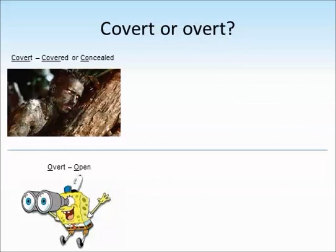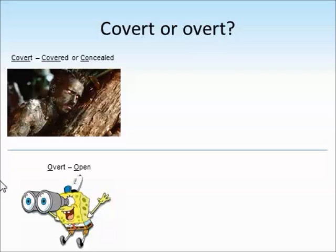First, let's look at the differences between covert and overt observations. Observations just involve watching people. We can either hide while we're watching them so that they don't know they're being observed, or we can tell them that we're watching them and be open about it. Think of the word covert — it sounds a little bit like covered or concealed — and overt, think of open.